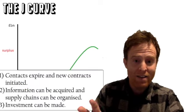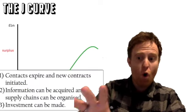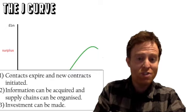The whole argument, as I've said there: all of these factors should lead to a current account surplus.